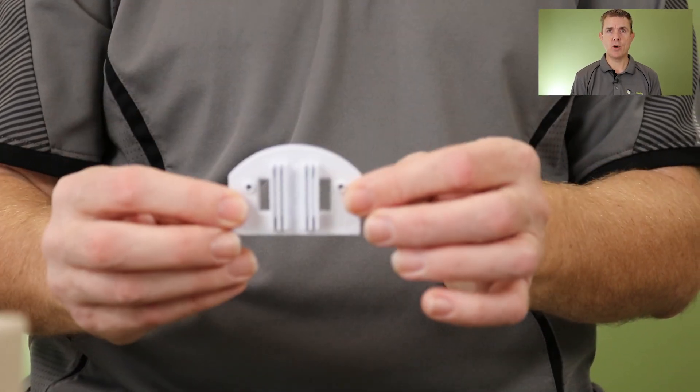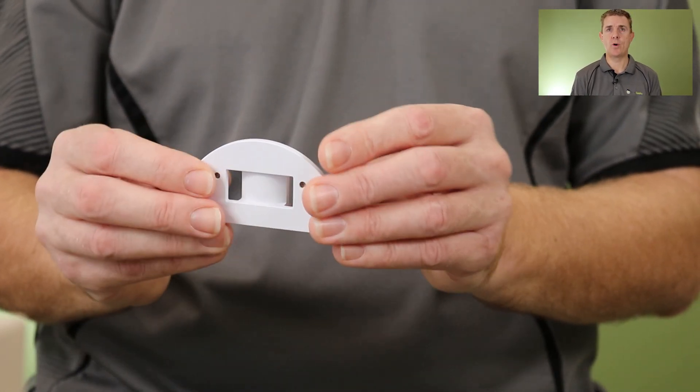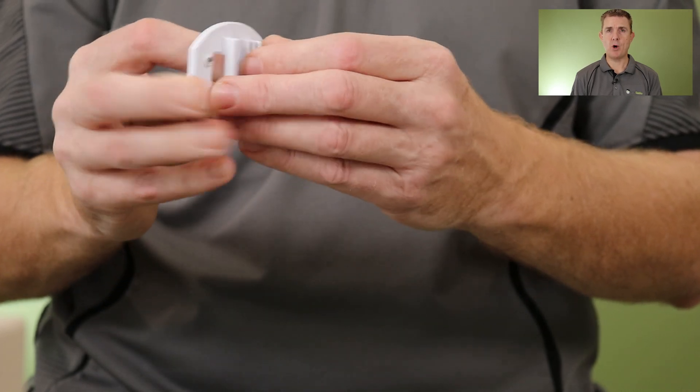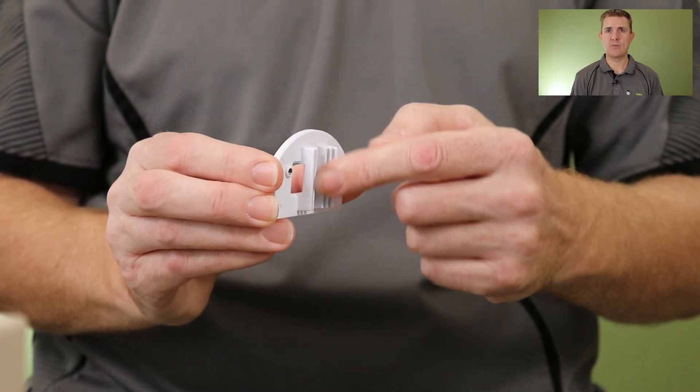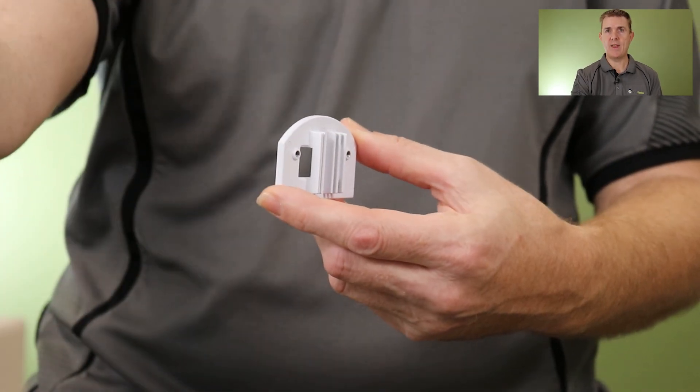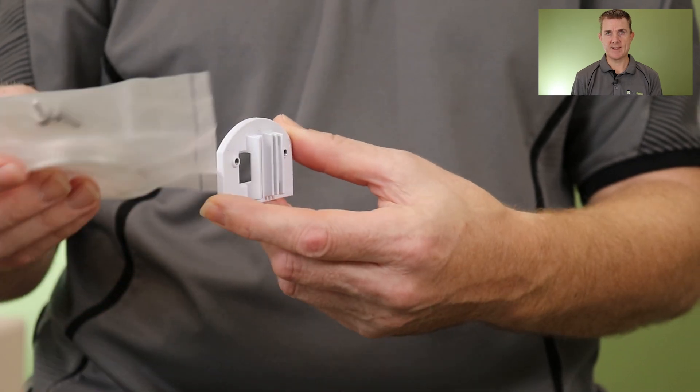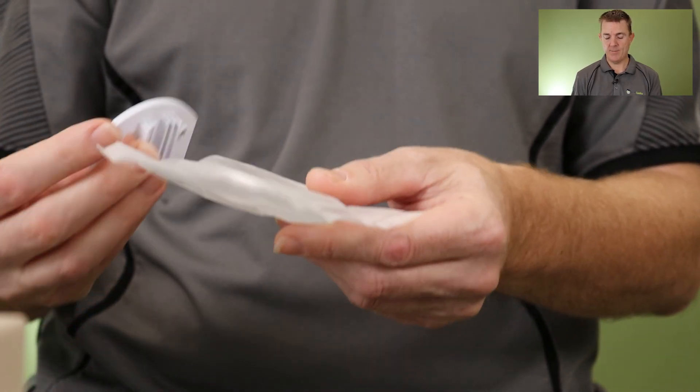Then you get a number of mounting options. That's your pole mounting. You can see on the back we've got grooves. The idea is once we've put that against the pole, we can run the tie through that and hold it in place.